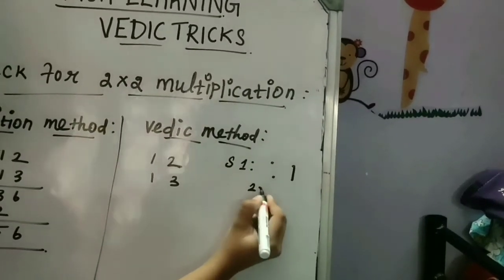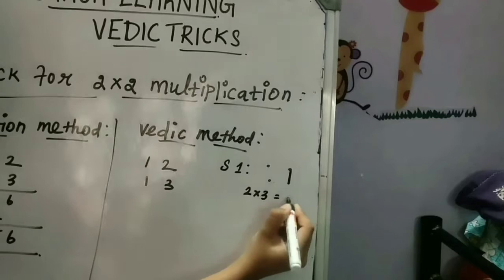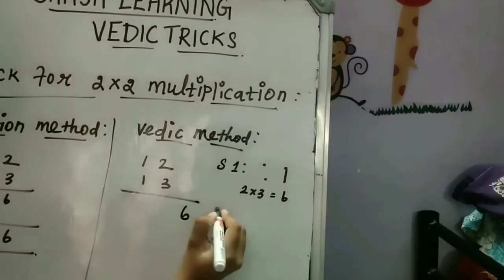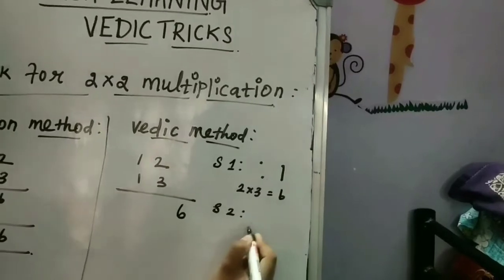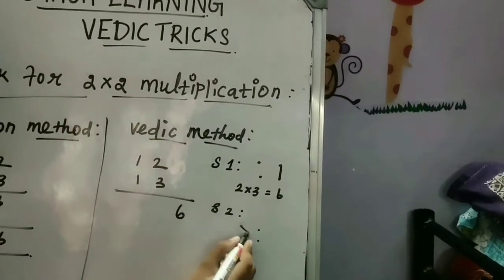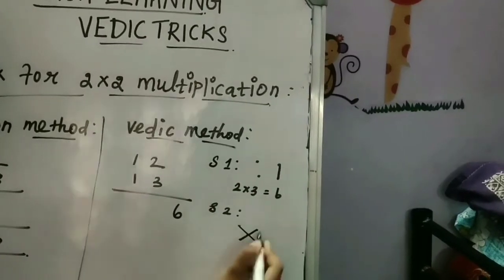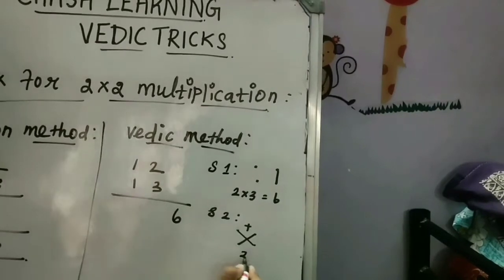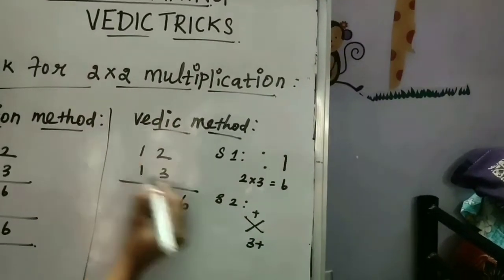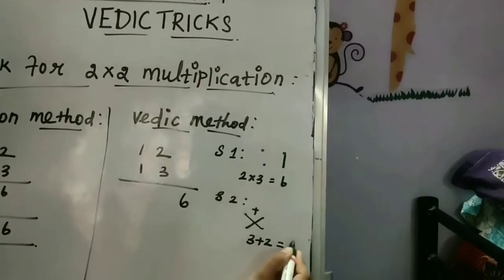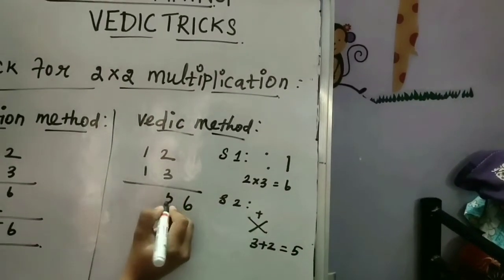First we should multiply these two numbers, which is 2 into 3. This is 6, so 2 times 3 is 6. Step 2: The same two dots followed by the two dots. Your second step, you should cross multiply and then you should add. I mean 3 times 1, which is 3, plus 2 times 1, which is 2.